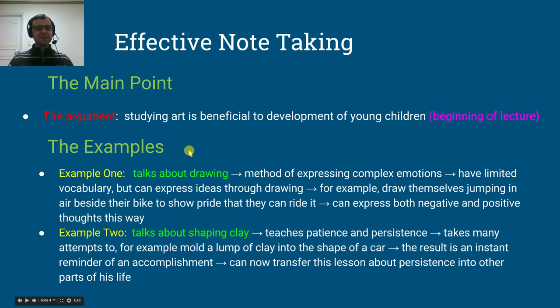Next, the examples. Let's talk about it. The first example that the lecturer uses in this particular lecture is drawing pictures. So I took a note about that. It simply talks about drawing. I'm not using full sentences here. I'm using point form. That's his first example. Then I took notes about all of the supporting details that followed this example. I took a note about how they express complex emotions with pictures. I took a note about how they have limited vocabulary, but can express ideas through drawing. I took a note about how they might draw themselves jumping in the air to show pride in their bicycle. I took a note about how they can express both negative and positive thoughts this way. These are notes about every single detail that the lecturer mentions.